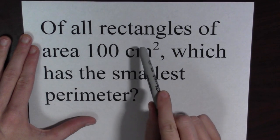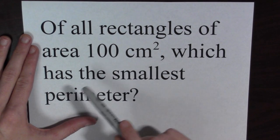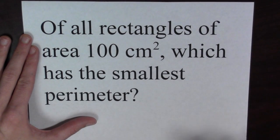Of all rectangles of an area of a hundred square centimeters, which of those rectangles has the smallest perimeter? Again, we're going to try to solve this problem using a step by step process.